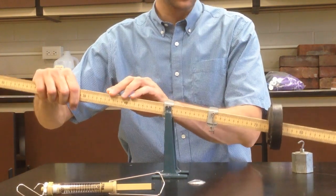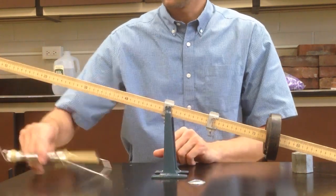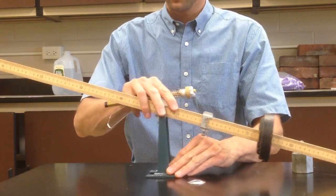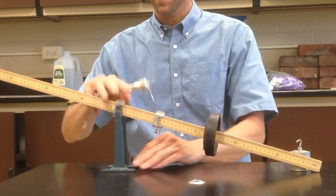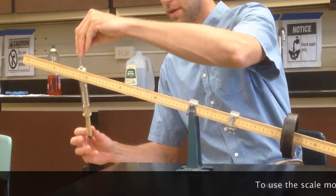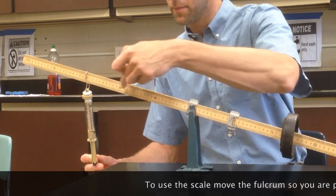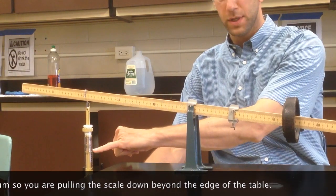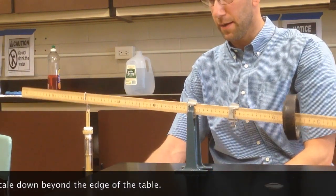On the opposite end of the lever, you'll use your spring scale. Line this up on whatever number you're supposed to line it up at. You can pull down, and then read the force in newtons that's being applied.